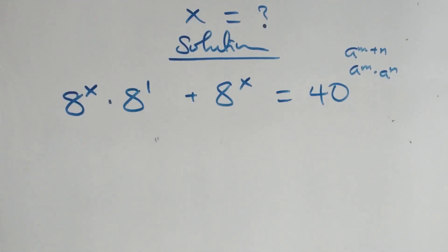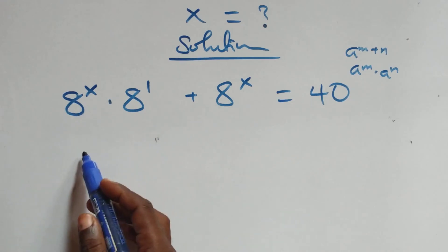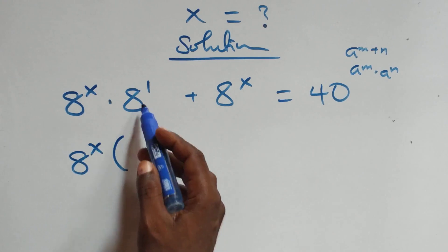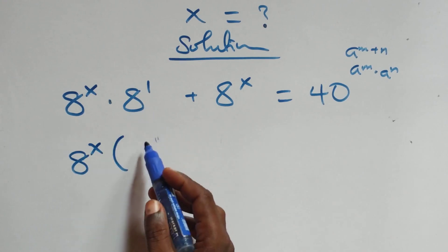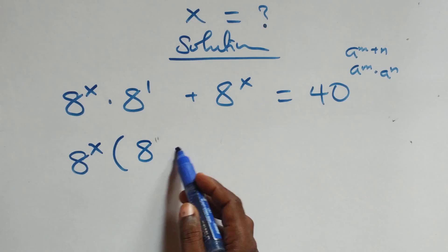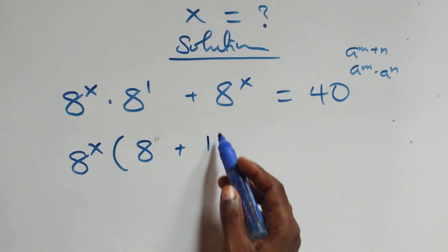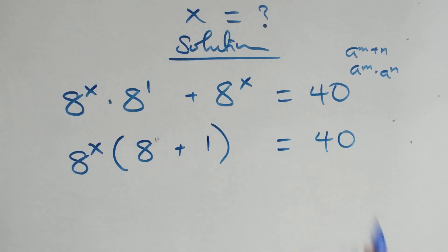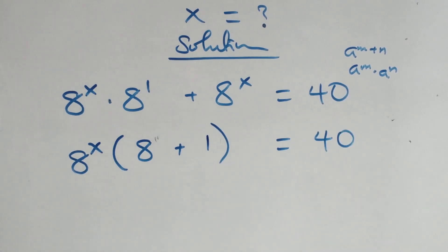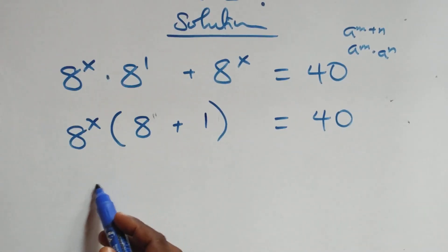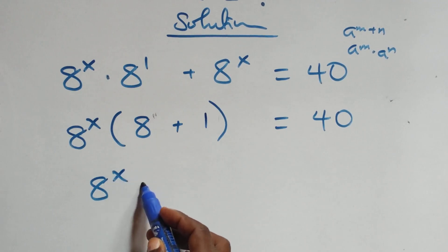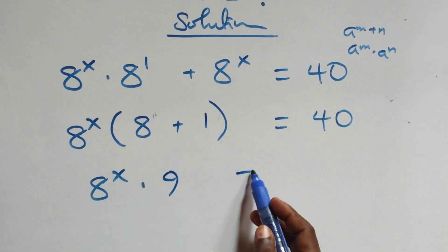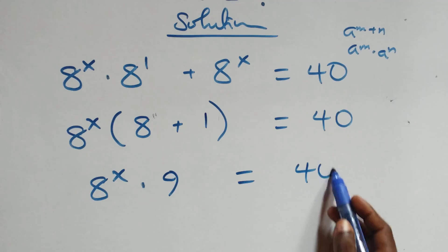Here we have a raised to power x — I will factor it out. We have a raised to power x into bracket: a raised to power 1 left here, which is 8, plus 1 left here, plus bracket, equals 40. So we have a raised to power x times 8 plus 1, that is 9, equals 40.